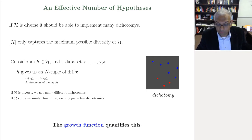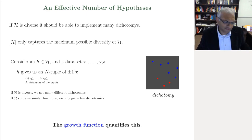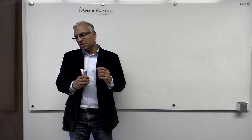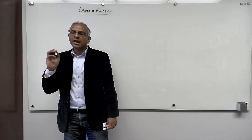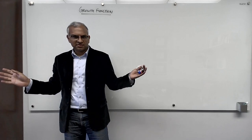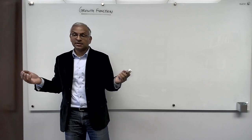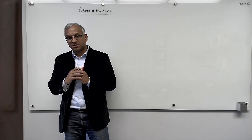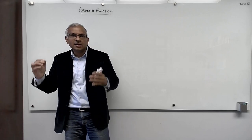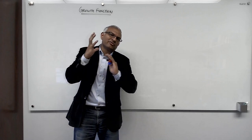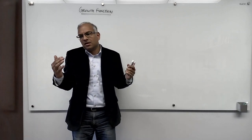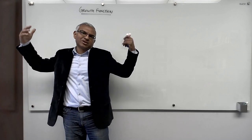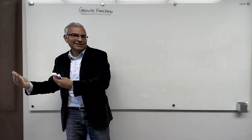We're going to develop the growth function — a measure of complexity for a hypothesis set that's not as crude as the number of hypotheses it contains. The size is crude, tends to be overkill, and doesn't capture diversity. The growth function captures the effective number of hypotheses. The key insight is to view a hypothesis set through the lens of a particular data set, because at the end of the day, we don't apply hypothesis sets in the abstract setting on the whole input space — we apply them to data.